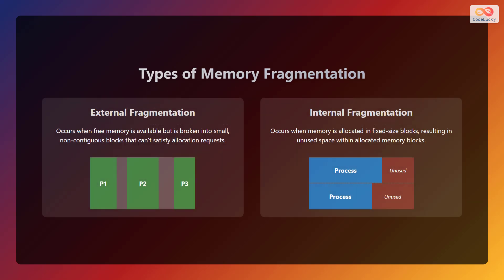There are two main types of memory fragmentation. First, let's look at external fragmentation. This occurs when there is enough total free memory available to satisfy an allocation request, but the memory is scattered into small, non-contiguous blocks. The second is internal fragmentation. This occurs when memory is allocated in fixed size blocks, resulting in unused space within the allocated memory block.